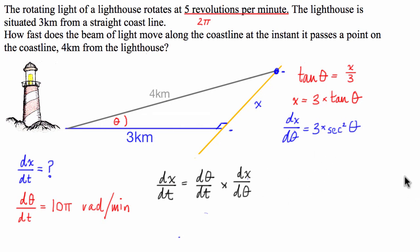Now what we're going to do is input all the information that we know, and hopefully we're going to come out with our answer or something close. So let's go back to black. We can say that dx/dt is equal to dθ/dt, which is 10π, multiplied by dx/dθ, which we've just calculated, is 3 sec squared theta.